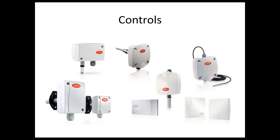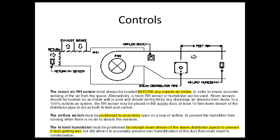Different controls are available across manufacturers: wall humidity set points, duct humidity sensors, air pressure controllers, and air proving switches. If using a duct humidity sensor, place it before any mixing takes place so it reads true room humidity. The airflow proving switch must be positioned right past the fan outlet to confirm fan operation before the humidifier turns on. The high limit switch must be far enough downstream — typically at least 6 feet — to prevent it from getting wet from the distributor pipe.